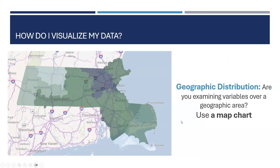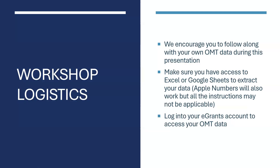For geographic distribution, a map chart is the best way to display that — here we have a map chart where the darker the area, the more individuals were served there. Now we're going to go into the workshop. We encourage you to follow along with your own OMT data. Make sure you have access to Excel or Google Sheets — Apple Numbers will also work, but the instructions won't line up. If you want, log into your eGrants account and I'll show you how to extract your data.